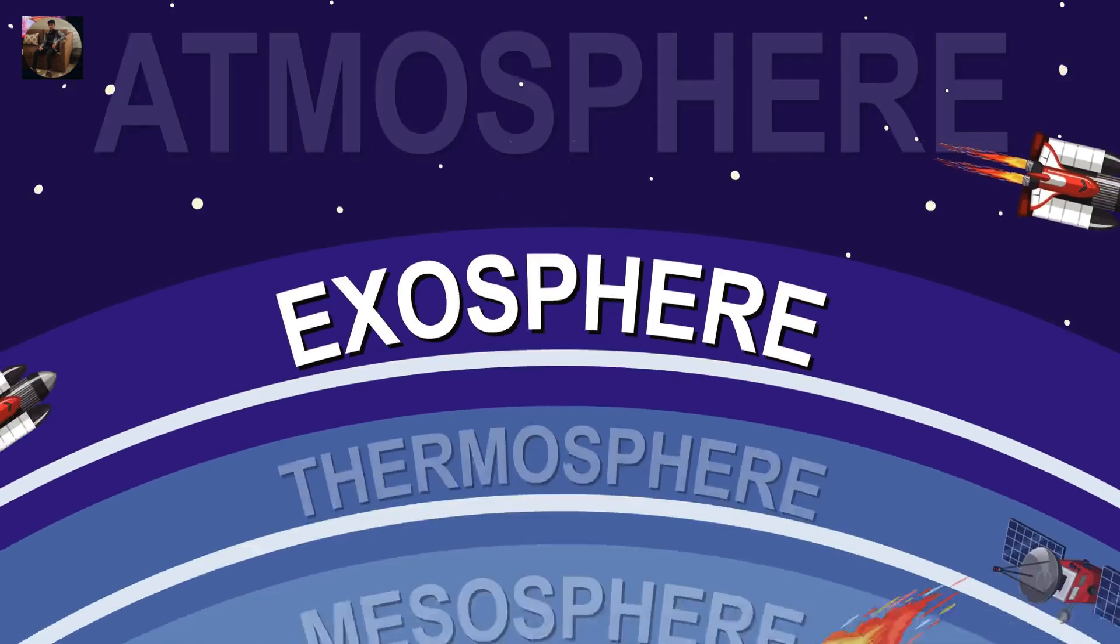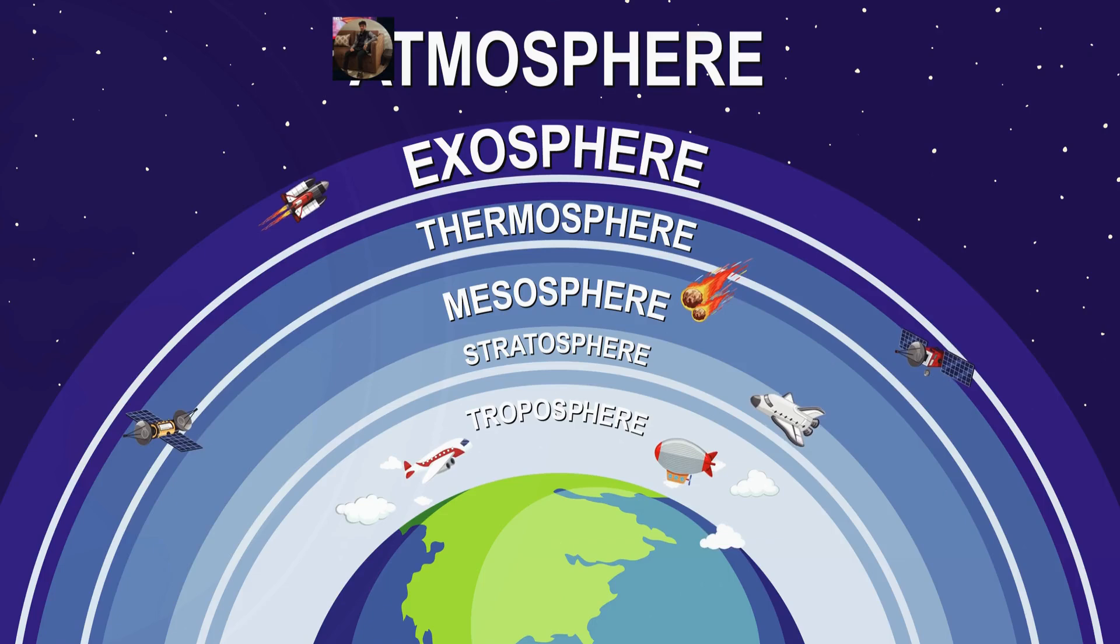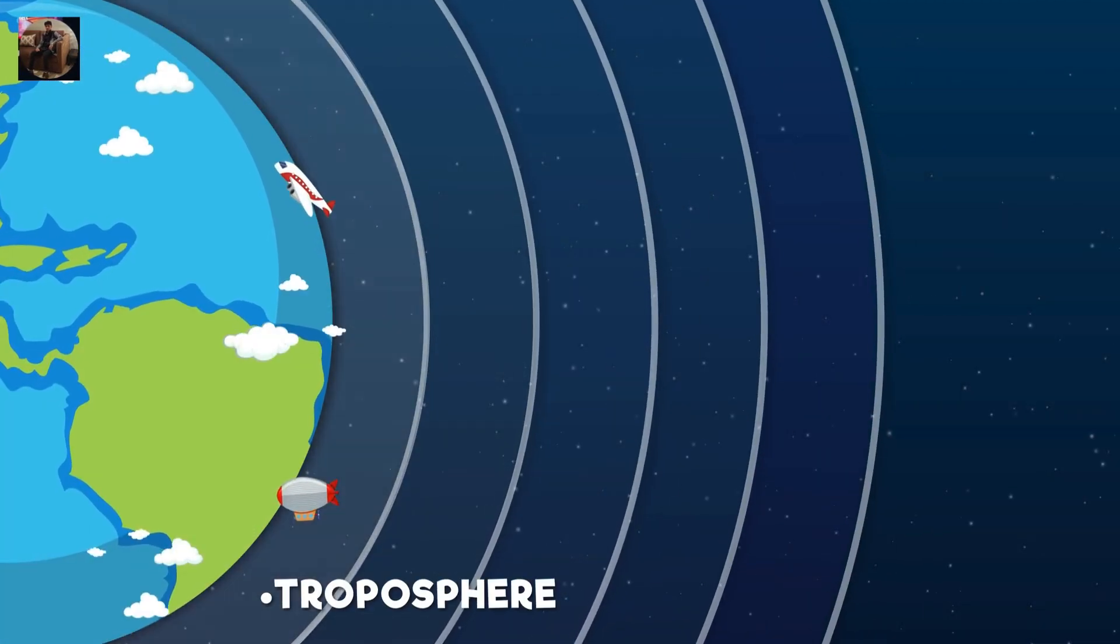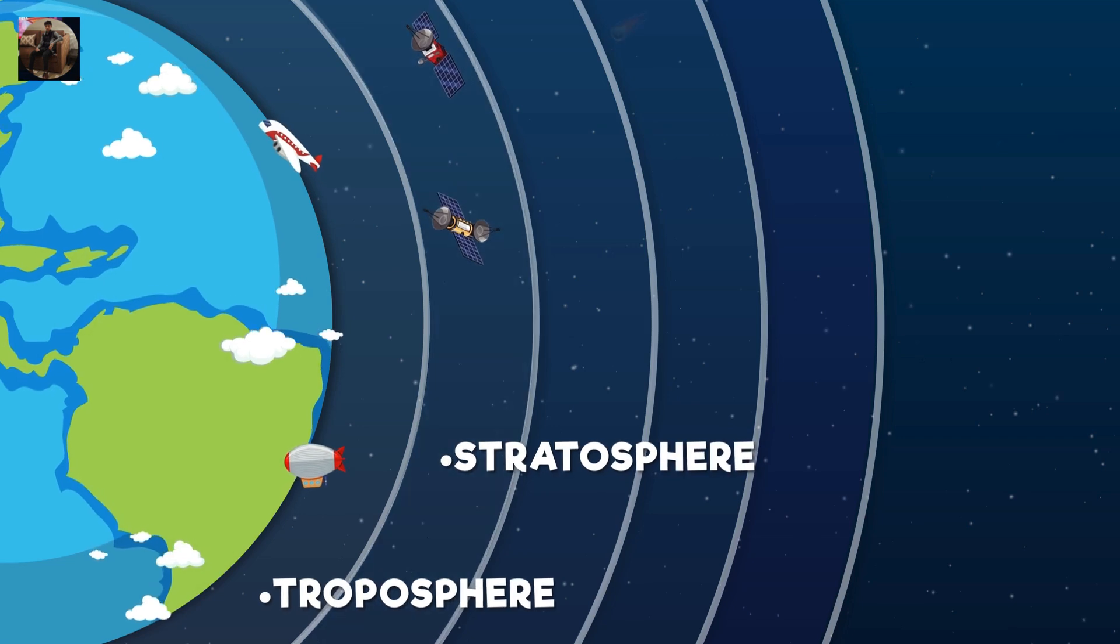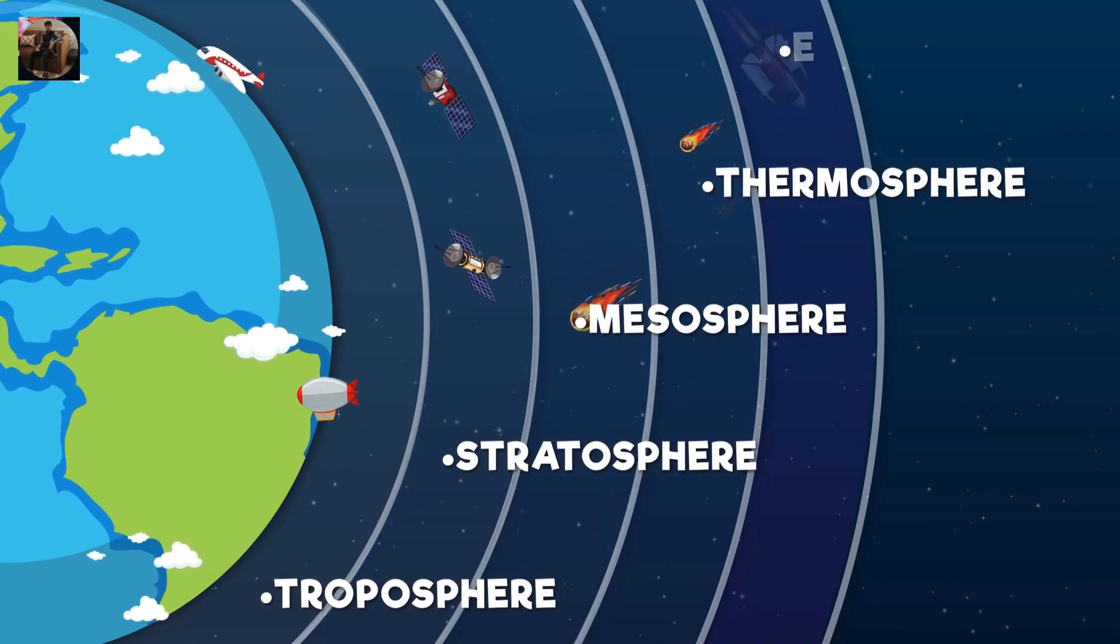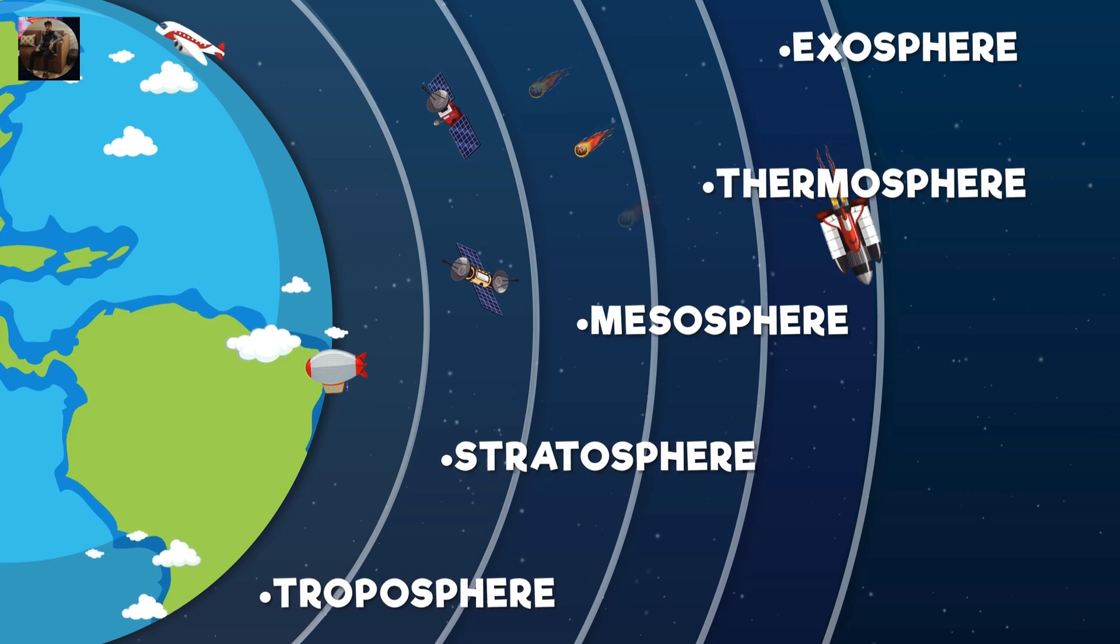Above the troposphere is the stratosphere, home to the ozone layer. This layer absorbs harmful UV radiation from the Sun, protecting life on Earth. Commercial airplanes fly here to avoid turbulence.